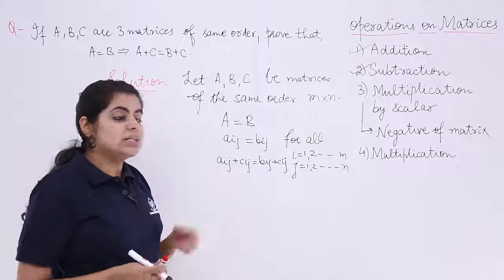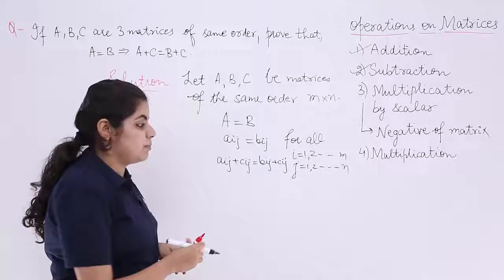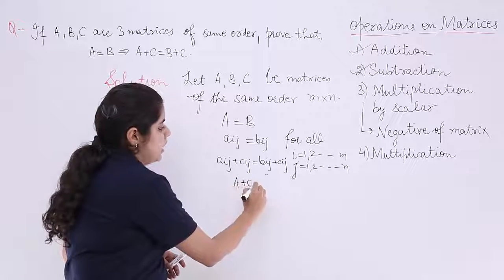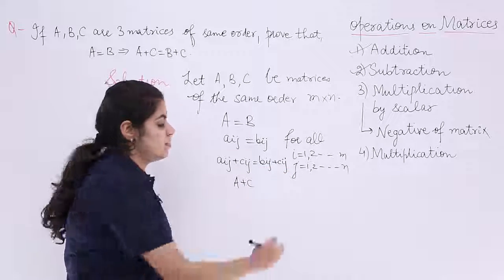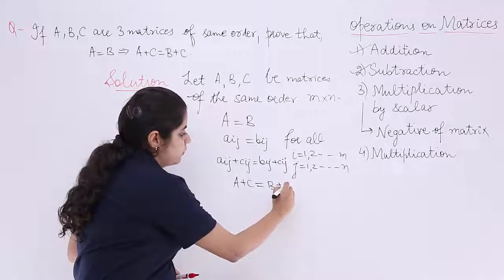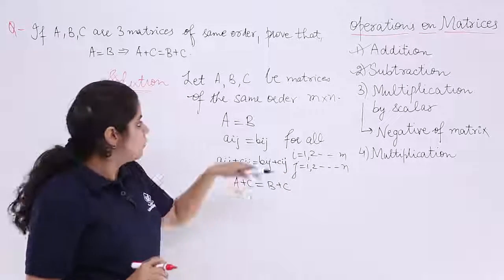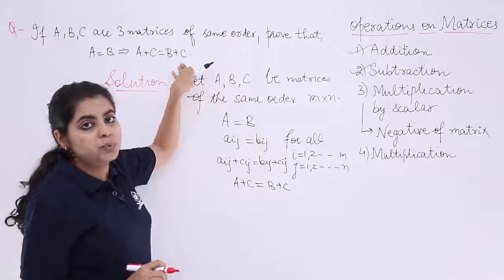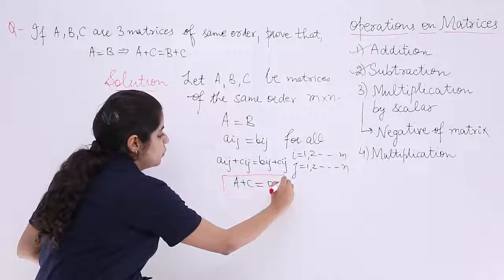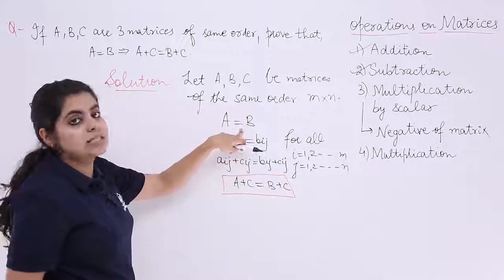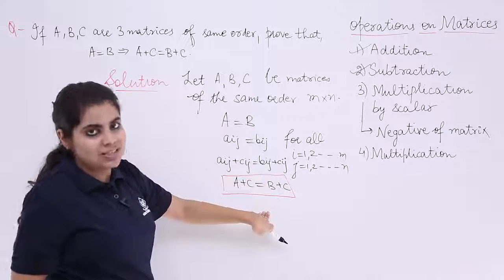When these both can be added, so A matrix plus C matrix gives me, and here this gives me B matrix plus C matrix and is this what we need to prove? Yes, we needed to prove this only that A plus C is equal to B plus C. So we started with A equals B and we finished at this stage.